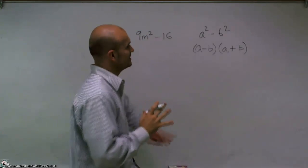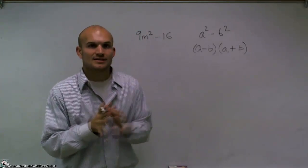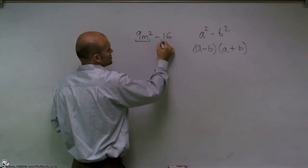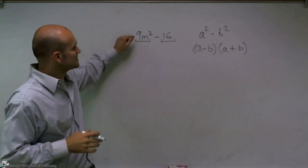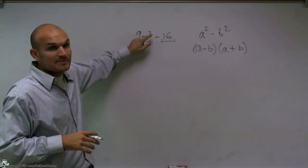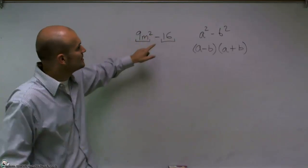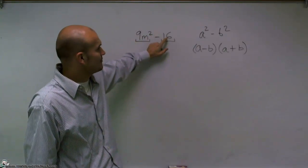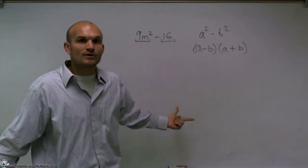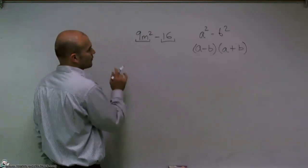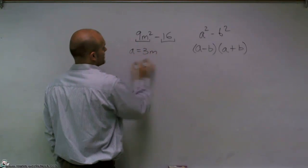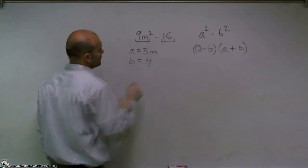It's a very important rule to understand. So I want to see, can I rewrite my first term as a square number, and is that a square number? Yes. 9 is a square number as 3 times 3, and m squared is m times m. Then I look at the next one, can I write 16 as a square number? Yes, 4 times 4 gives you 16. So therefore, a could be 3m, and b could equal 4.